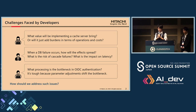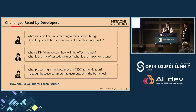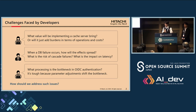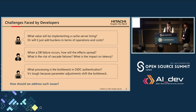Some designers and developers face challenges: What value will implementing a cache server bring? Or will it just add burden in terms of operation and cost? Another question: when a DB failure occurs, how will the effect spread? What is the risk of cascade failure? What is the impact of latency? So how should we address such issues? We need to provide an accurate, data-driven understanding of system behavior even during the development phase.